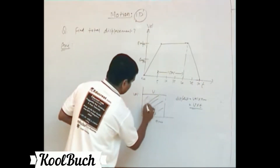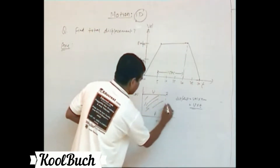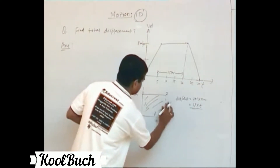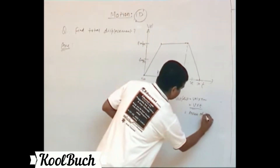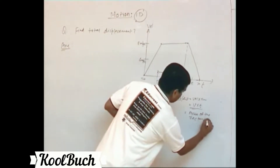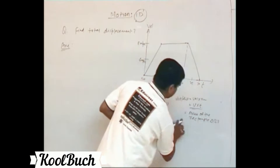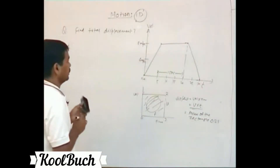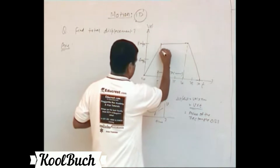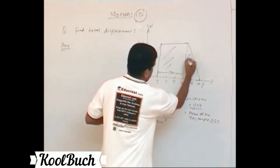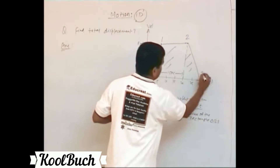v into t is nothing but the area of the graph between point 1 to 2. With velocity on the y-axis and time on the x-axis, v into t is the area of the rectangle 0-1-2-3. Using the same analogy, we can find the total displacement by calculating the area of the shaded region under the graph.